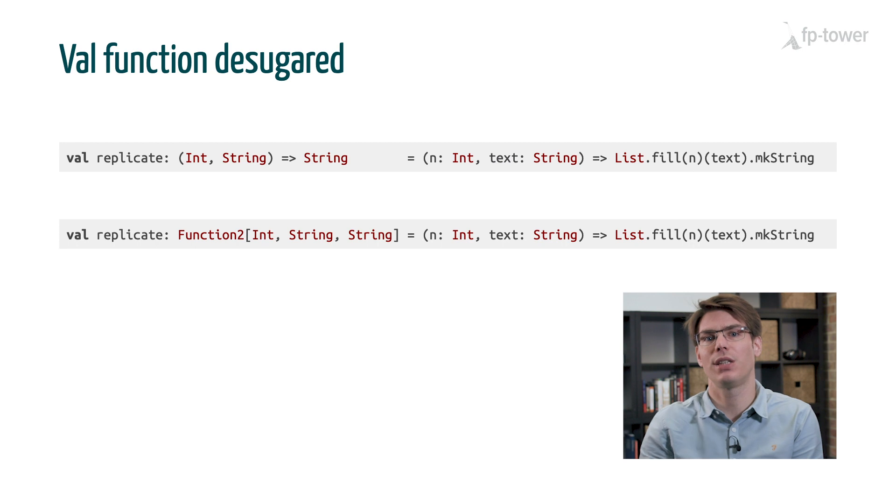So let's start by expanding the type of replicate. It's in fact called function 2 int string string, because the replicate takes two arguments, an int and a string, and it returns a new string. The Scala language has 23 different kinds of functions, from function 0 that takes no input, it's like a lazy value, to function 22 that takes 22 inputs.